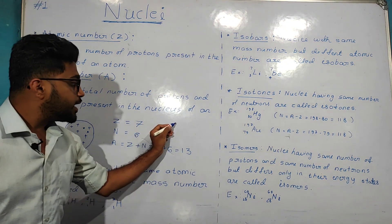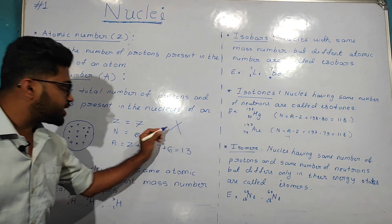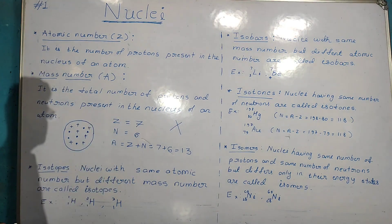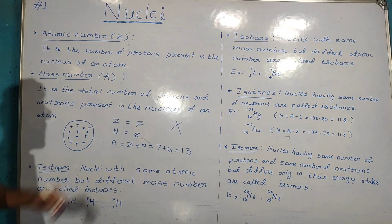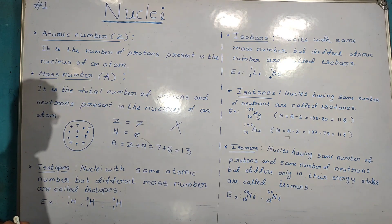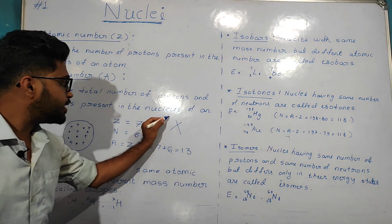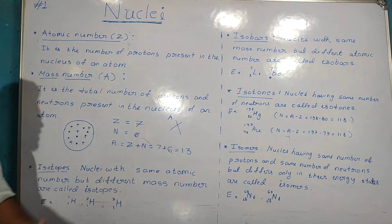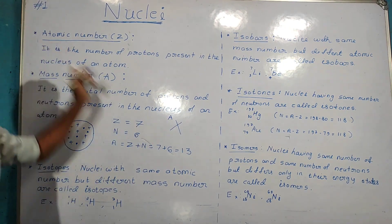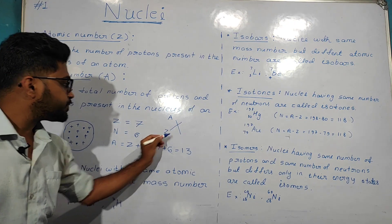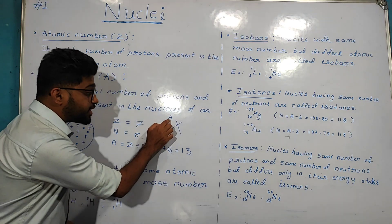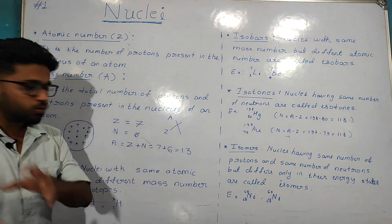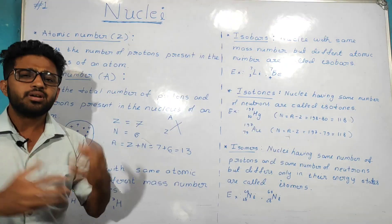This element is represented as X. The mass number A is written above the symbol, and the atomic number Z is written below the symbol to denote an element.